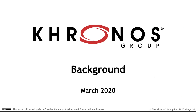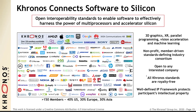The Khronos Group are the people in charge of things like OpenGL, OpenAL, OpenML, and of course Vulkan. Here are the people connected to and members of the Khronos Group, and you can see it's basically everybody.